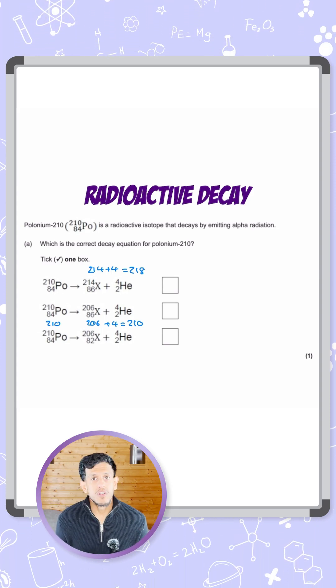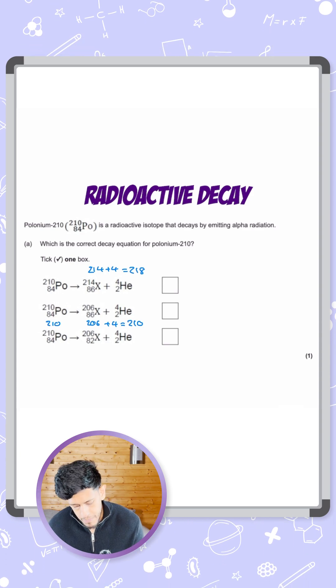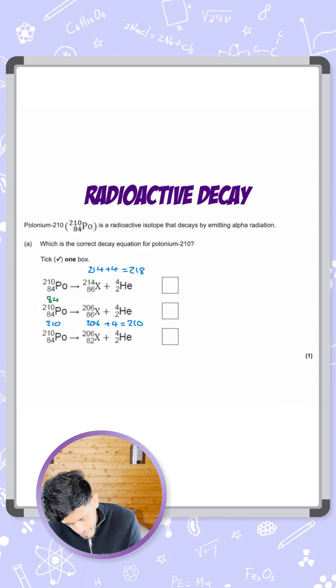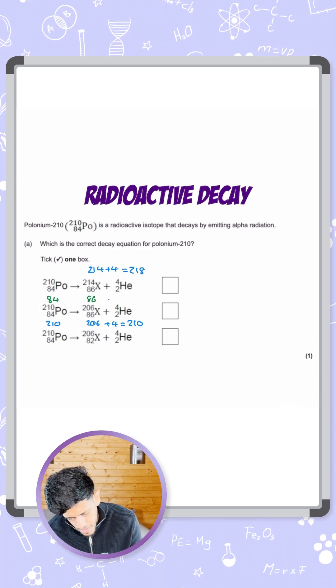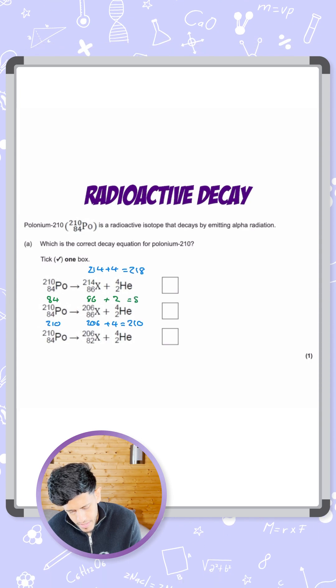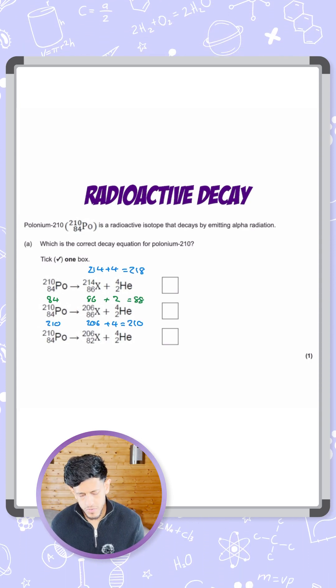I'll do it in green. So looking at the atomic number now, let's look at the middle equation: 84 to 86 plus 2, giving you 88. So 84 on the left, 88 on the right—there's no balance.